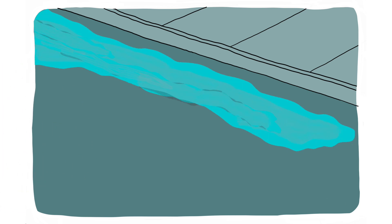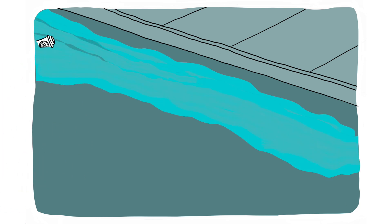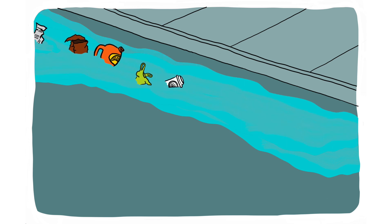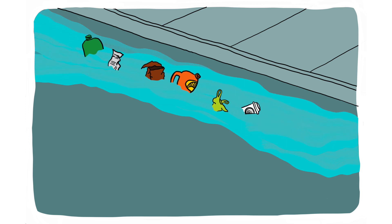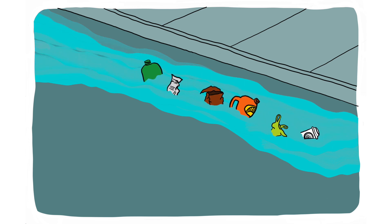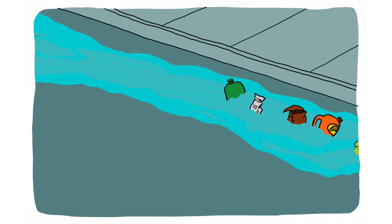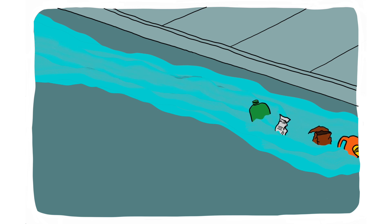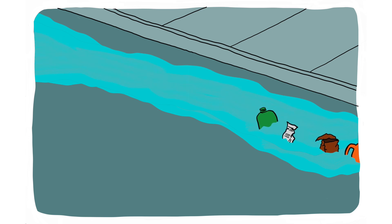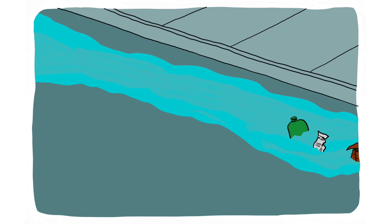As stormwater flows over hard, also called impervious surfaces, it collects trash, sediment and chemicals like motor oil and fertilizer that can pollute local waterways such as the Truckee River.